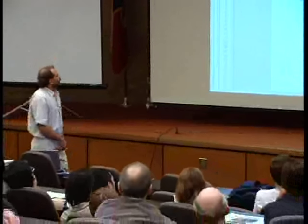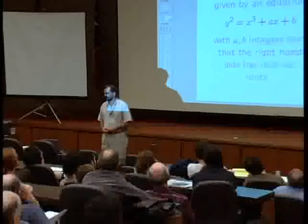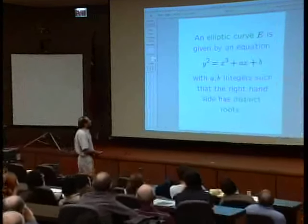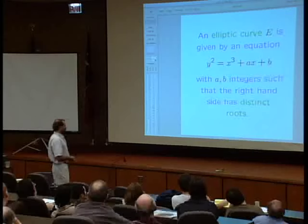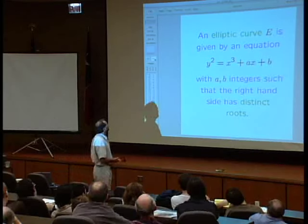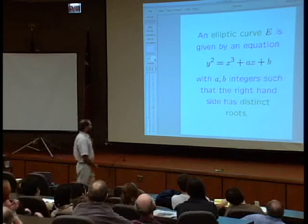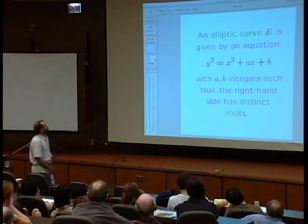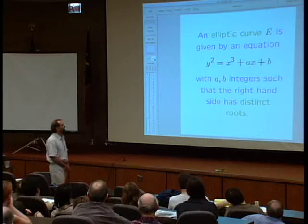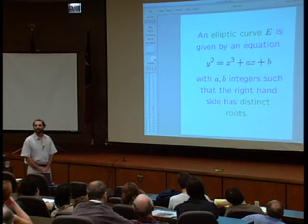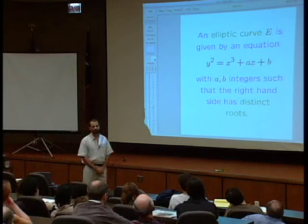So now we come, finally, to the topic of the talk proper, which is elliptic curves. For us, an elliptic curve E is an equation given in this form. We have two variables, x and y. The a and b are constants — we'll think of them as integers. The equation is y² = x³ + ax + b. So it's a polynomial of degree 3 in x, and we require that the right-hand side, which is a polynomial of degree 3, has distinct roots.